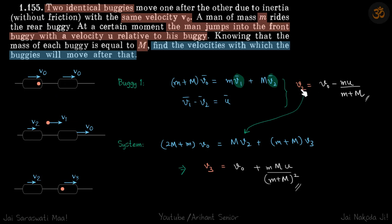Because we have already found v2, initial momentum of the system is (buggy mass + man mass)v0, and final momentum is Mv2 + (m+M)v3. We already have calculated the value of v2, so that gives the value of v3, our answer.